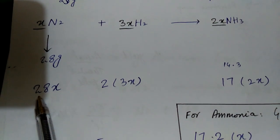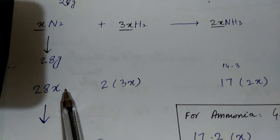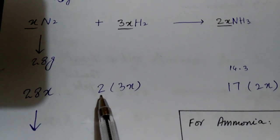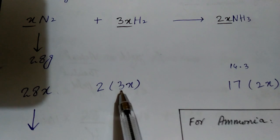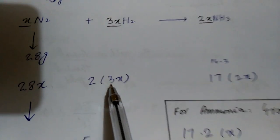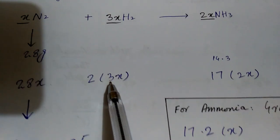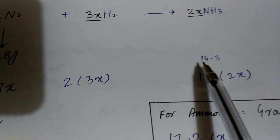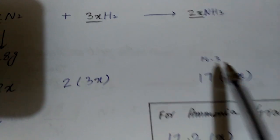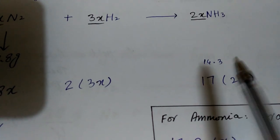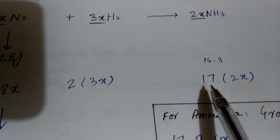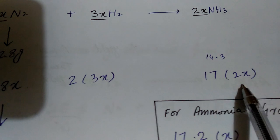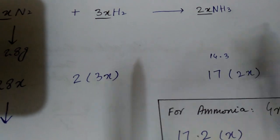For nitrogen, the molecular mass is 28. We will add the coefficient to get the molecular mass. For ammonia, nitrogen is 14 and hydrogen contributes to make the molecular mass 17. We will write down the element, its coefficient, and its molecular mass here in this form.